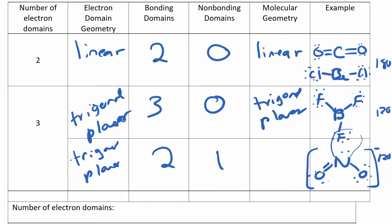The bond angles didn't really change, but it has a different shape. When I look at it, it looks bent — it's no longer trigonal planar because I don't have a third atom over there. I just have this bent structure. So the electron domain geometry is trigonal planar, but the molecular geometry is bent, because when you're looking at molecular geometry you're looking at where the atoms are actually located in space.